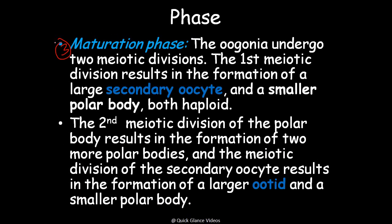The third phase is the maturation phase. The ovary undergoes two meiotic divisions. The first meiotic division gives rise to a large secondary oocyte and a smaller polar body — both are haploid. The second meiotic division of the polar body results in formation of two more polar bodies, and the meiotic division of the secondary oocyte results in formation of a large ootid.